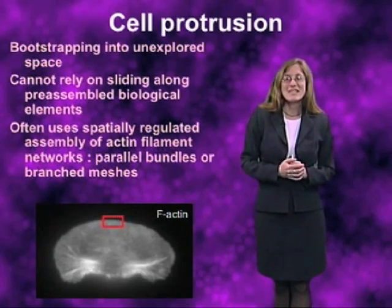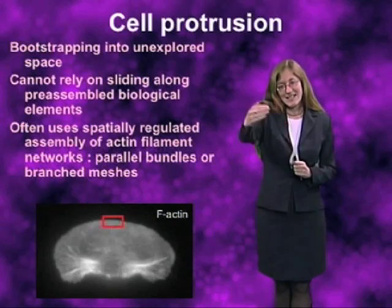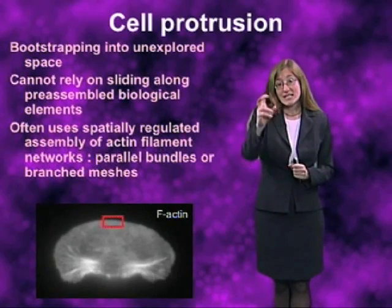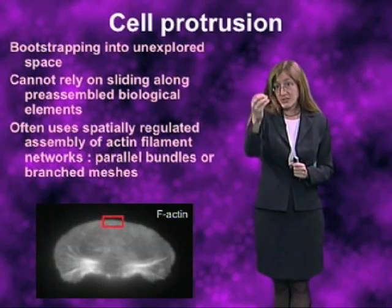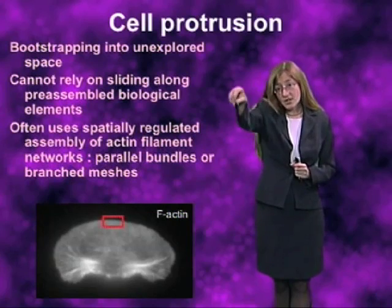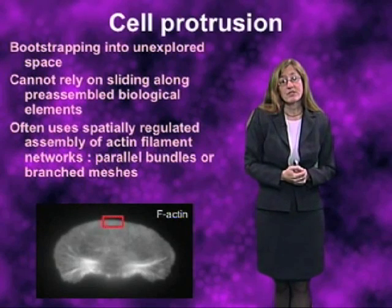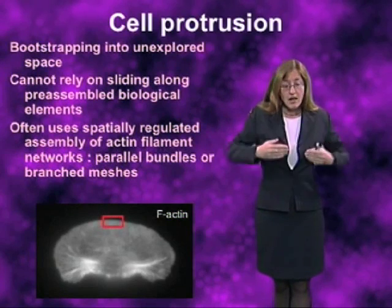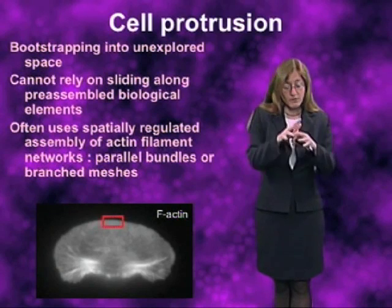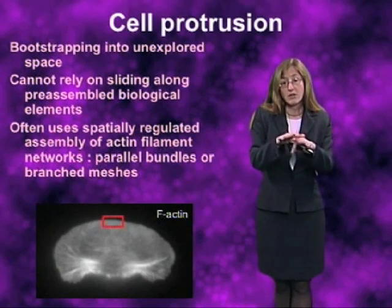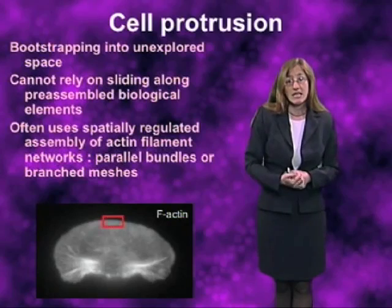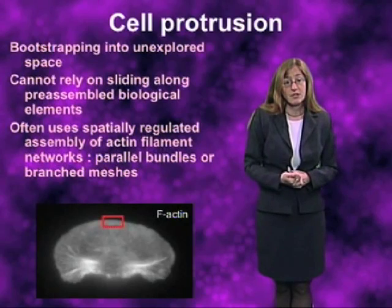In many cases, what we see is that the protrusion of the leading edge of the cell is actually achieved by assembly of specifically actin filaments right underneath the plasma membrane at the leading edge of the cell. And these can either be in forms of parallel bundles or also branched meshworks, pushing out the cell in slightly different geometries.